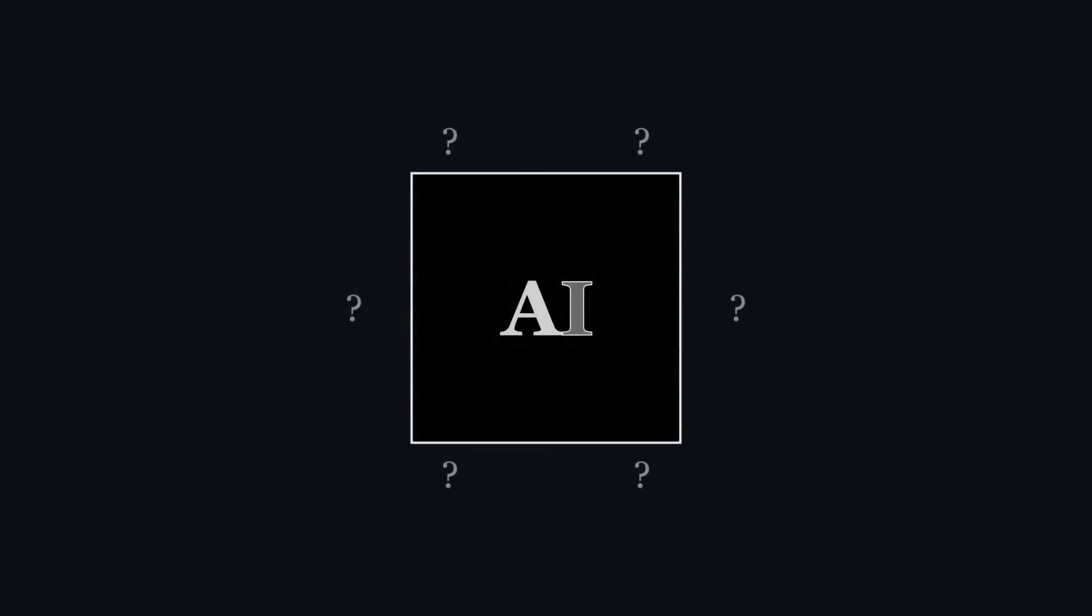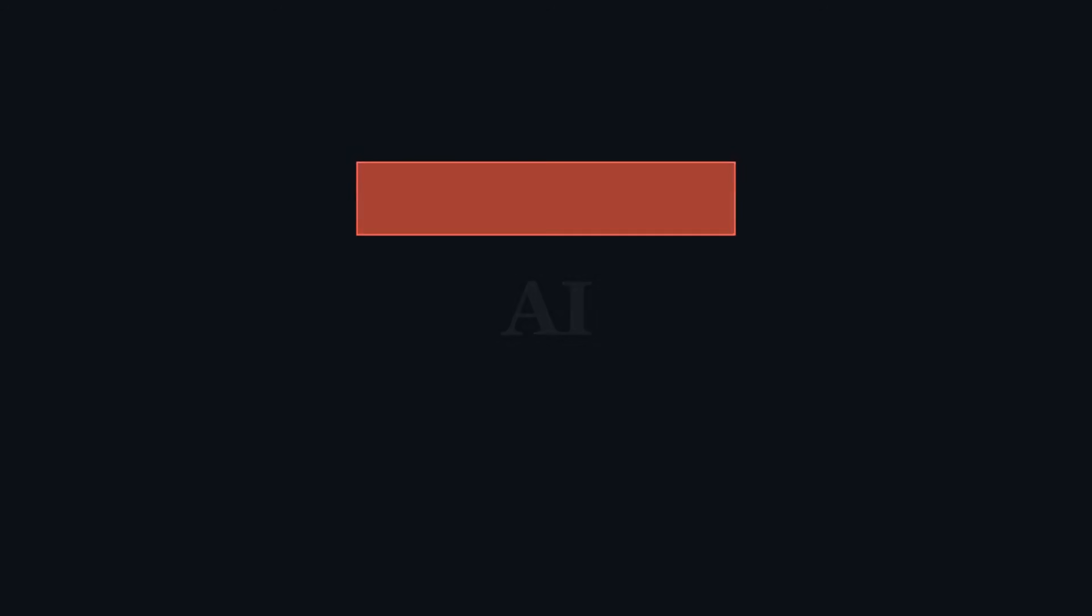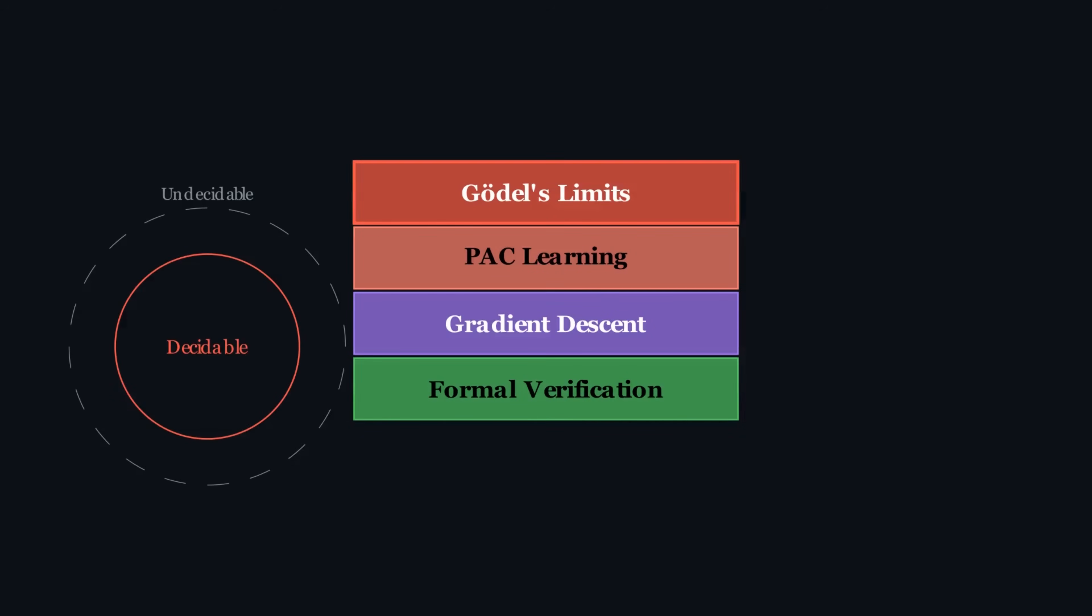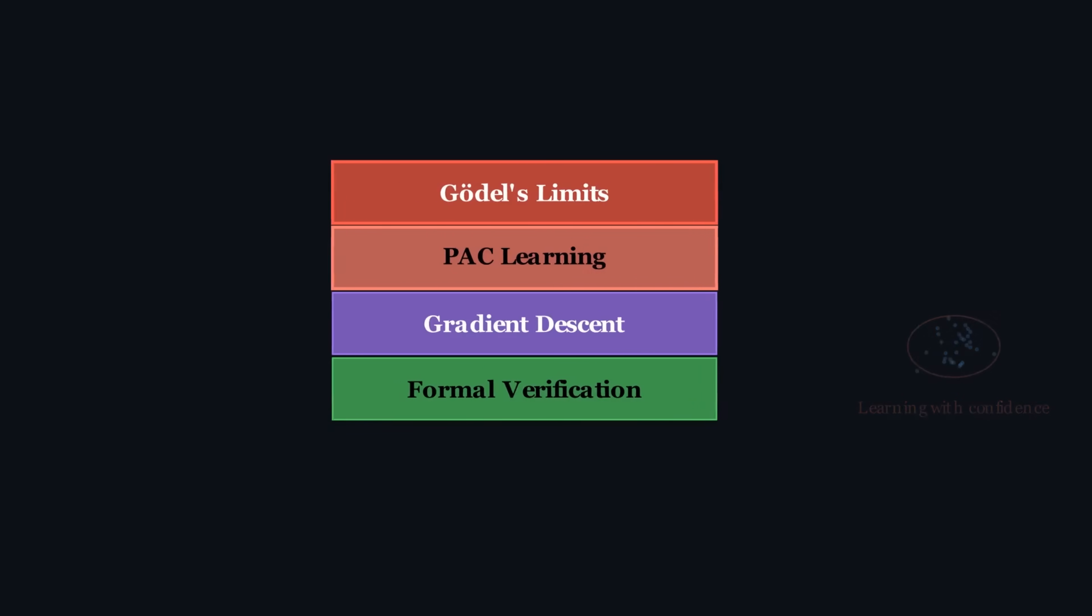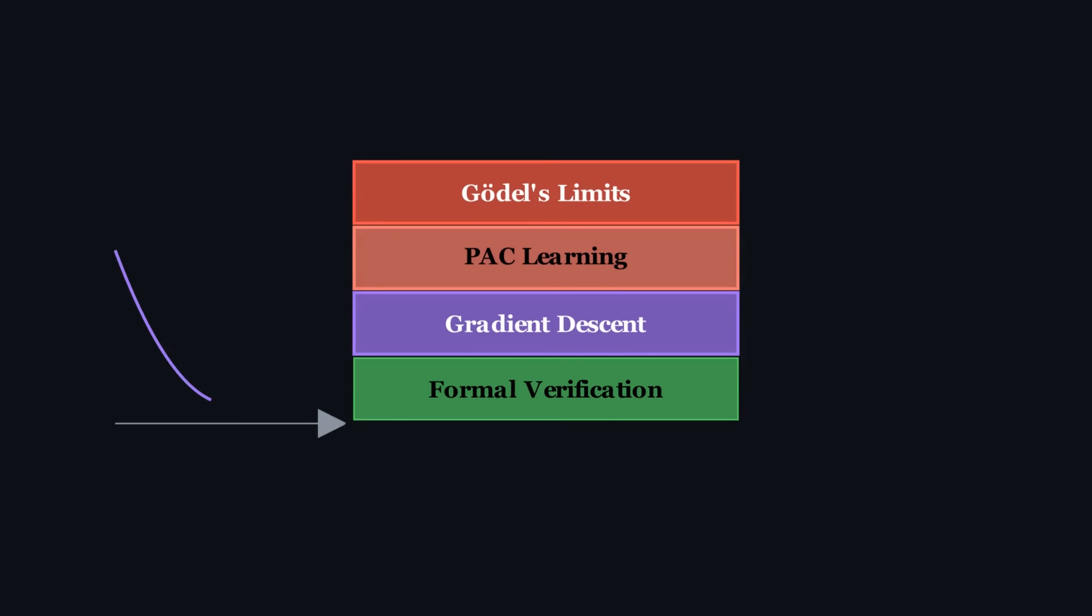So, the black box isn't a black box at all. It's a stack of proofs. Gödel's proof of limits, which define the field of play. PAC Learning's proof of possibility, which gave us the confidence to learn from data. Gradient Descent's proof of process, which gave us a practical way to train our models. And Formal Verification's proof of safety, which gives us the confidence to deploy them.